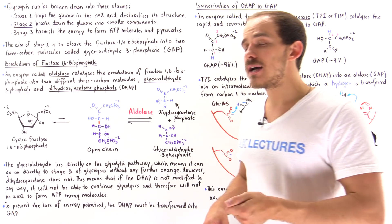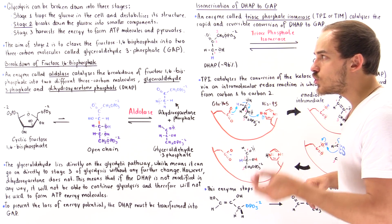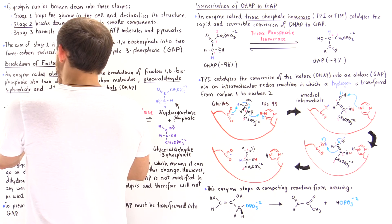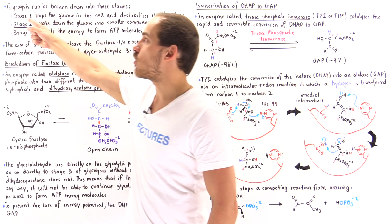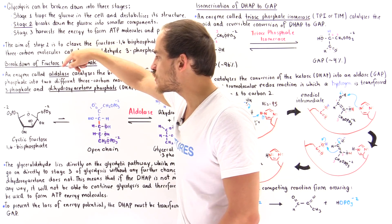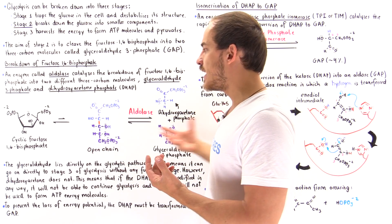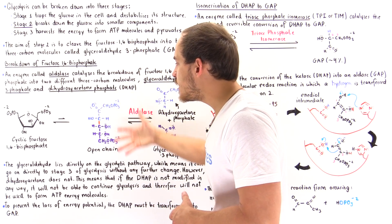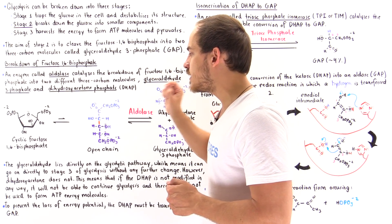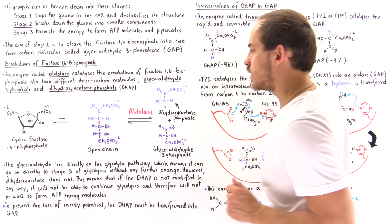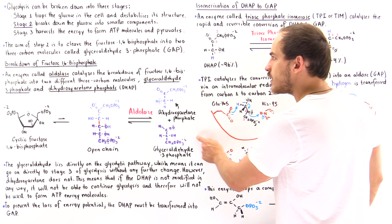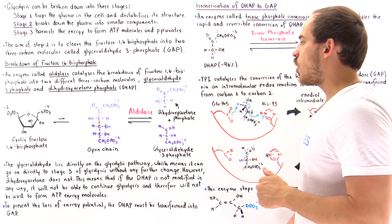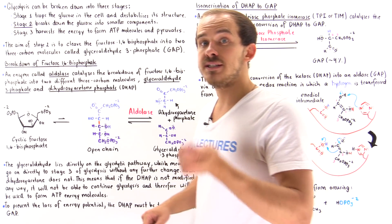Aldolase is the enzyme that catalyzes the breakdown of fructose 1,6-bisphosphate into two different three-carbon molecules. Starting with fructose 1,6-bisphosphate in cyclic form from stage one, the aldolase moves in — but before it can catalyze the reaction, the cyclic fructose must be transformed into its open-chain counterpart, since that is the form that allows aldolase to access and cleave the bond. Notice the molecule is color-coded: the purple region becomes glyceraldehyde 3-phosphate, while the blue section becomes dihydroxyacetone phosphate, or DHAP.